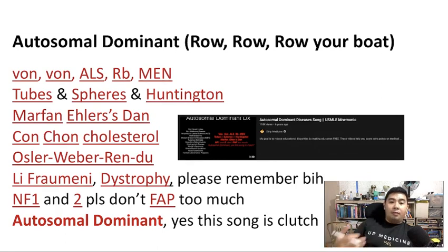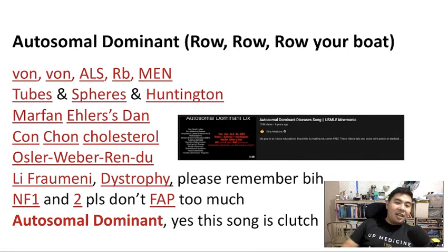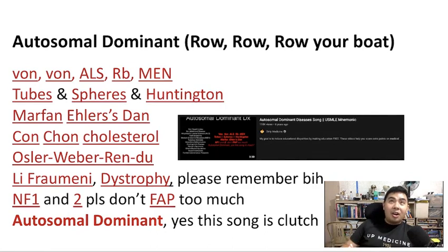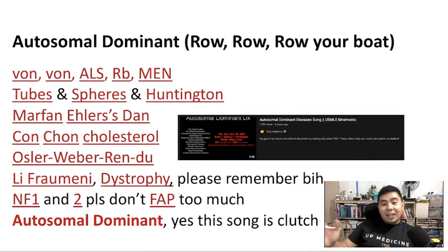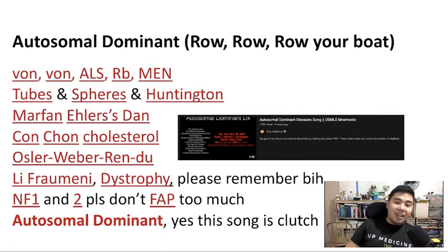Von, Von, ALS, RB, MEN — Tubes and Spheres and Huntington, Marfan, Ehlers, Dan. Con, Con, Cholesterol, Osler, Weber, and Do. Leave from any dystrophy, please remember B. N, F, 1 and 2, please don't flap too much. Autosomal dominant, yes, this song is clutch.